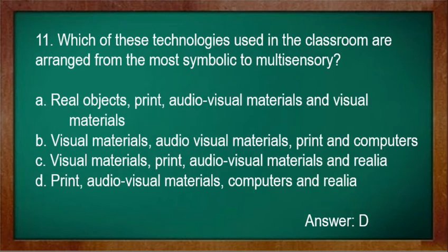Number 11: Which of these technologies used in the classroom are arranged from the most symbolic to multi-sensory? A. Real objects, print, audiovisual materials, and visual materials. B. Visual materials, audiovisual materials, print, and computers. C. Visual materials, print, audiovisual materials, and realia. D. Print, audiovisual materials, computers, and realia. Answer: D.